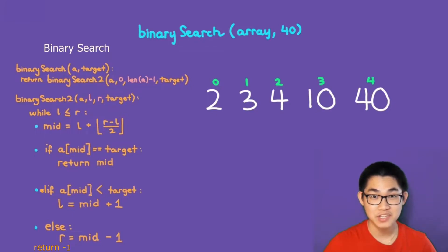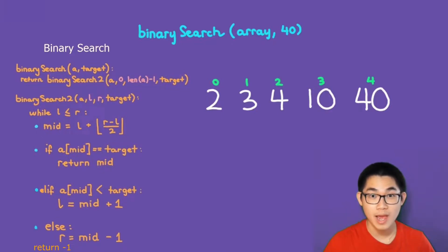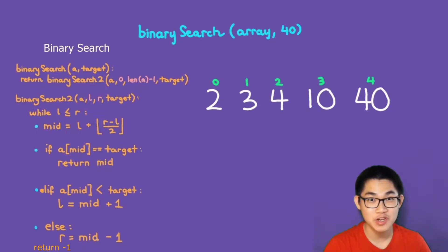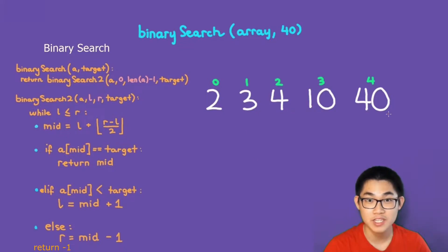I'm going to explain binary search, how it works, and then we'll take a look at the code for binary search using a for loop and then using recursion. The purpose of binary search is for you to determine if something exists in an array or not. The precondition is that this array must be sorted in order for us to perform the binary search.